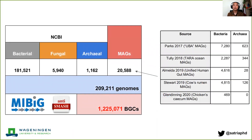Given the close link between these genomic features and the actual chemical compounds they may encode for, we can imagine that if we take all the sequenced microbial genomes in public databases like NCBI, we can do genome mining and use them as a proxy to map the biosynthetic diversity of all the potential secondary metabolites that those microbial organisms may produce.